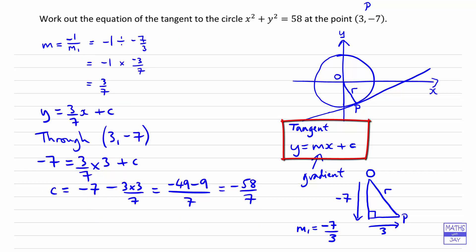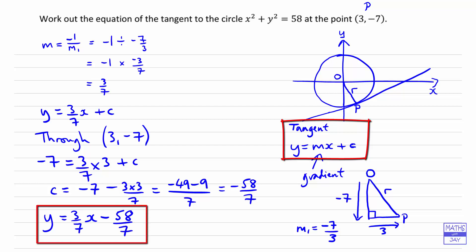So now we can write down the equation of the tangent. We've found c, so we substitute it into y equals three-sevenths x plus c, replacing c with minus 58 over 7. We can then check that seems like a reasonable answer. Looking at our sketch, that line has a fairly shallow positive gradient, which looks right. And minus 58 over 7 — does that seem like a reasonable y-intercept? The circle has equation x squared plus y squared equals 58, so the radius is the square root of 58, which is between 7 and 8. The tangent cuts the y-axis at minus 58 over 7, which is approximately minus 8 point something, and that seems consistent with the sketch.